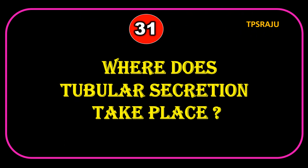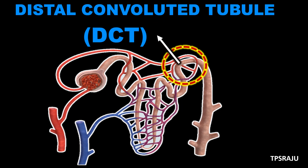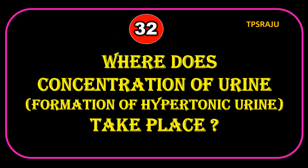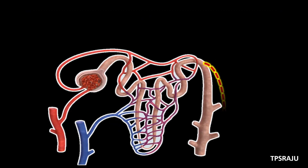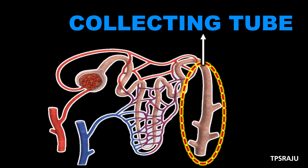Where does Tubular Secretion take place? DCT — Distal Convoluted Tubule. Where does concentration of urine take place? Collecting Tube.